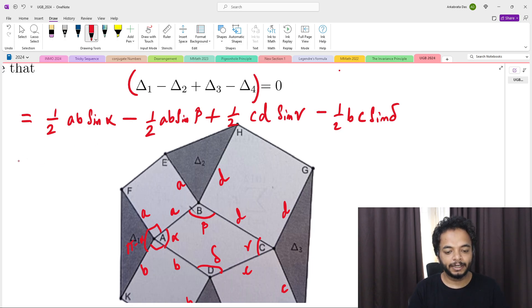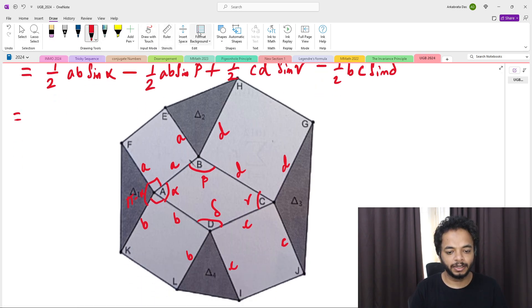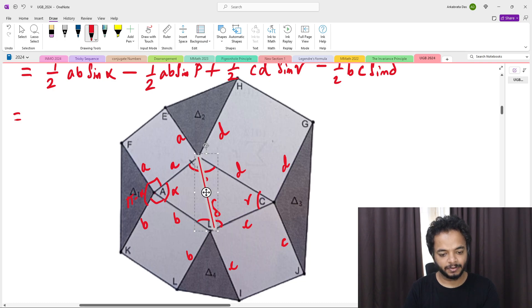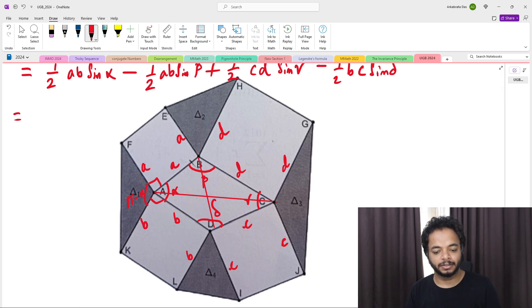What we will do is we will divide this quadrilateral into two parts. I divided the quadrilateral and joined the diagonal.